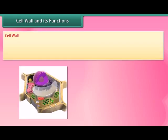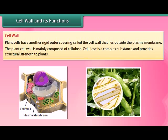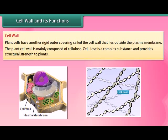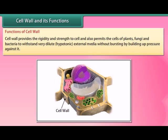Plant cells have another rigid outer covering called the cell wall, which lies outside the plasma membrane. The plant cell wall is mainly composed of cellulose, a complex substance that provides structural strength to plants. The cell wall provides rigidity and strength to the cell, and also permits the cells of plants, fungi, and bacteria to withstand very dilute hypotonic external media without bursting by building up pressure against it.